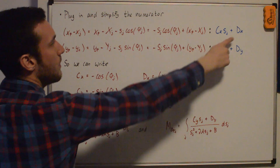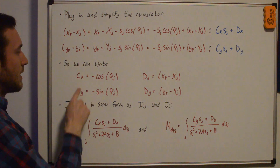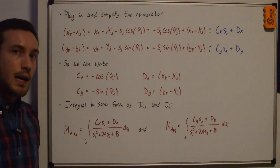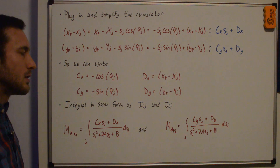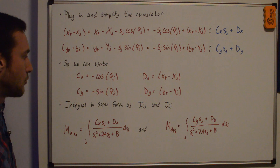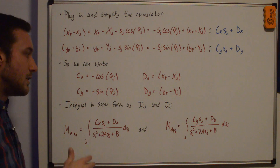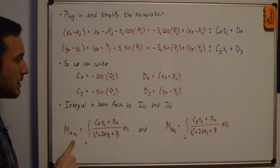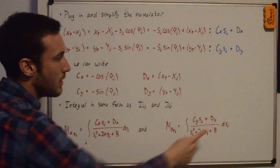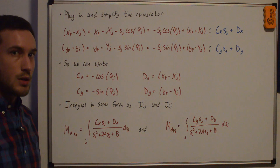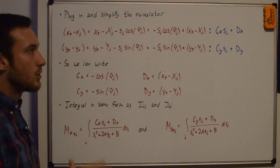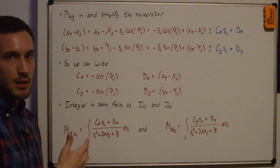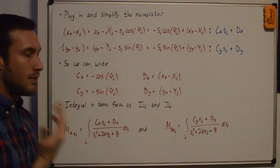We can now write out the constant values CX, CY, DX, and DY. These integrals are the same form as the IIJ and JIJ integrals solved in previous videos, just with CX and DX (or CY and DY) instead of C and D, to distinguish between the X and Y components. So MXPJ is this integral with CX and DX, and MYPJ is this integral with CY and DY. Since we've already solved this integral form, we can directly write the final solution listing the A, B, CX, DX, CY, DY, and E variables.